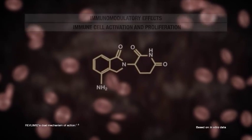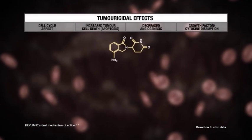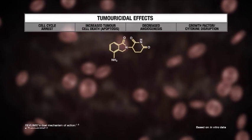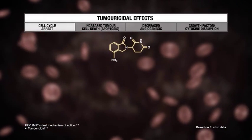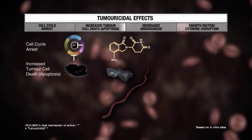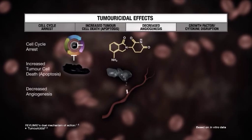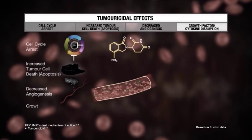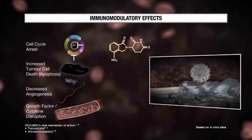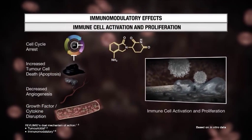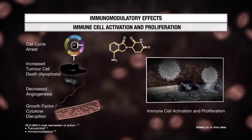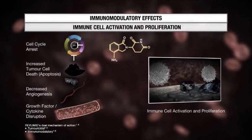In summary, from in vitro data, Revlimid has a proposed dual mechanism of action. It has a direct anti-tumor effect, which results in cell cycle arrest, increased tumor cell death, decreased angiogenesis, and disruption of growth factor and cytokine production. Revlimid also has an immunomodulatory effect, which enhances immune cell activation and proliferation, resulting in continued tumor killing through immune-mediated mechanisms.